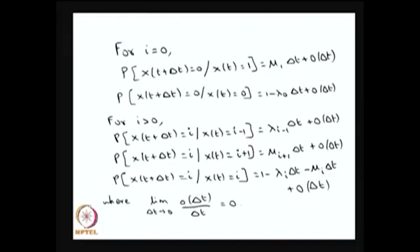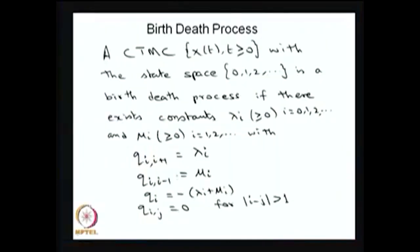This order of delta t is a function of delta t — it need not be the same, and as delta t tends to 0, order of delta t divided by delta t goes to 0. So the system moves from one state either one step forward or one step backward; these are the only three possibilities. Therefore the Q matrix has: rate λᵢ for moving from state i to i+1, rate μᵢ for moving from i to i-1, and rate minus (λᵢ + μᵢ) for staying in state i. There is no other move.